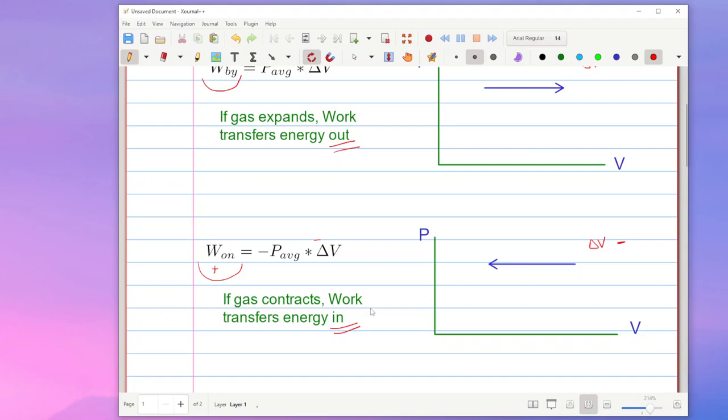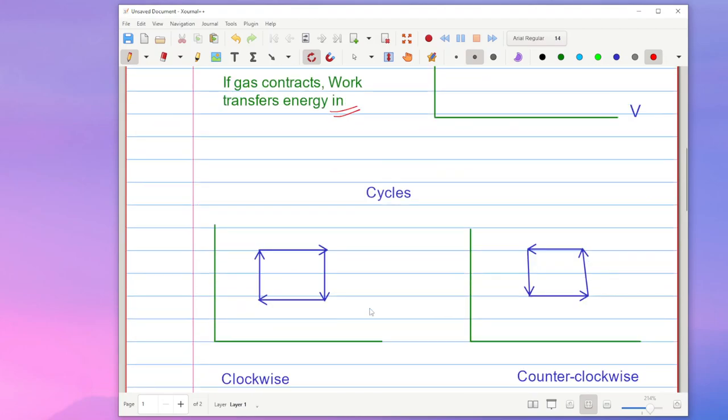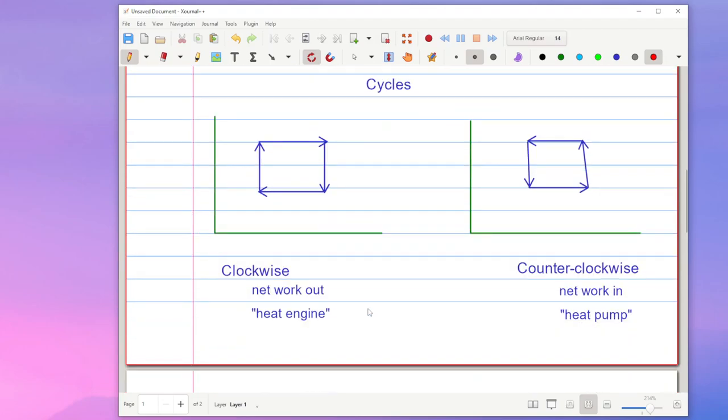Now when we talk about cycles what we have is not a single process but a set of processes that ends up going back to where it starts. And it doesn't have to be a square but if the overall flow is going clockwise around the cycle...